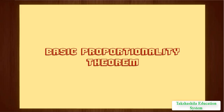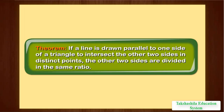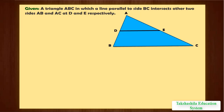In this module, we will learn about the basic proportionality theorem. We state the theorem: if a line is drawn parallel to one side of a triangle to intersect the other two sides in distinct points, then the other two sides are divided in the same ratio. We are given a triangle ABC in which a line parallel to side BC intersects the other two sides AB and AC at D and E respectively. We need to prove that AD upon DB is equal to AE upon EC.